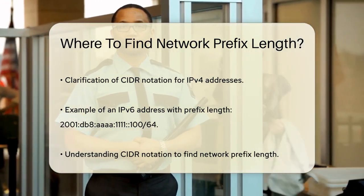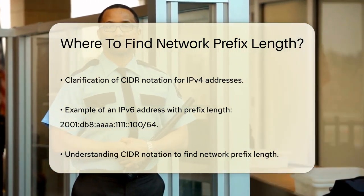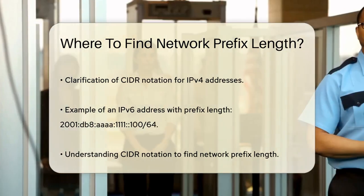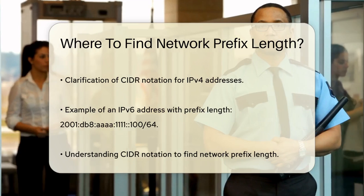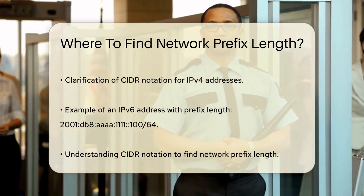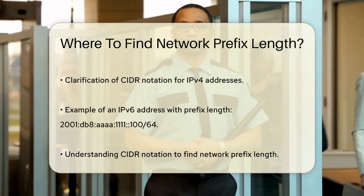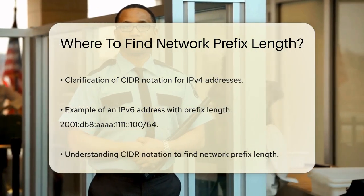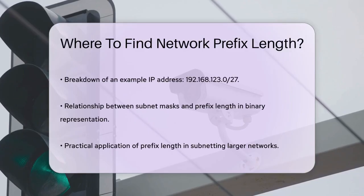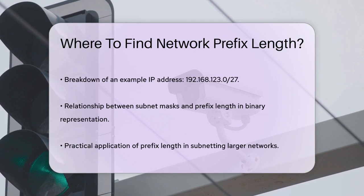To find the network prefix length, you need to look at the CIDR notation. For instance, in the IP address 192.168.1.0/27, the /27 indicates that the first 27 bits are the network prefix. This is derived from the subnet mask, where the number of one-bits in the binary representation of the mask gives you the prefix length.